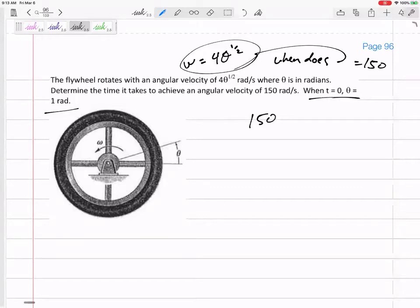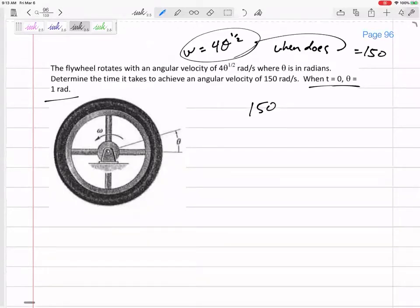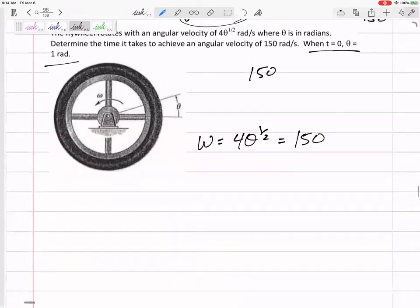Okay, well, what happens if I set it to 150? So if my angular velocity is 4 theta to the 1/2 – okay, so right now, I'm not sure about how to find the time when it equals 150, but I could find the theta. You know, I could find the theta that makes this reach 150. So let's do that, and then we'll figure out what we need to do next.